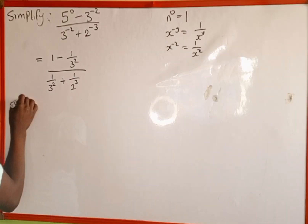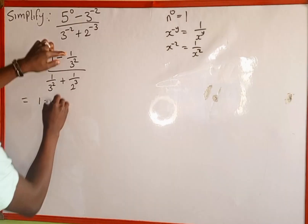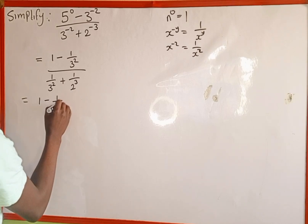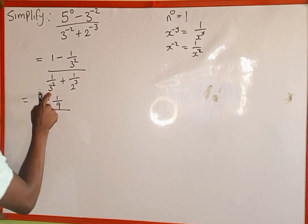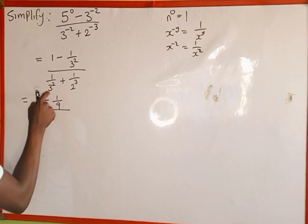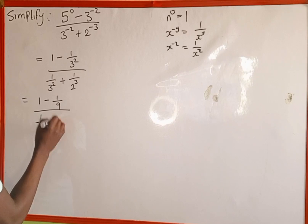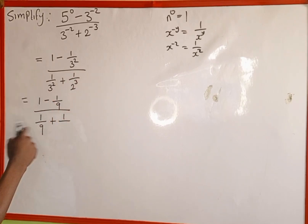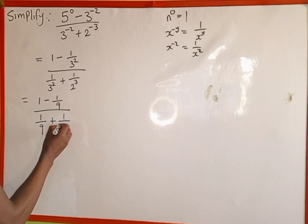The next thing we're going to do is simplify. We have 1 minus 1 all over 3 to the power of 2. Since 3 to the power of 2 is 3 multiplied by 3, which gives us 9. Then in the denominator, 3 multiplied by 3 gives us 9, plus 1 all over 2 to the power of 3, which is 2 multiplied by 2 multiplied by 2, giving us 8.